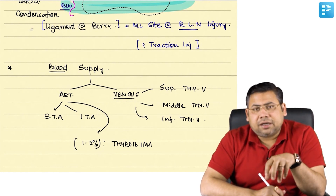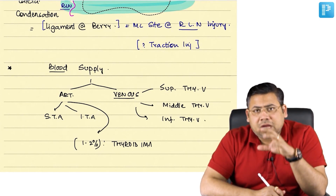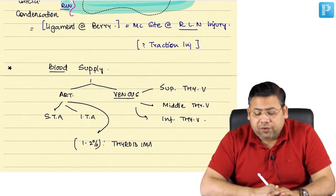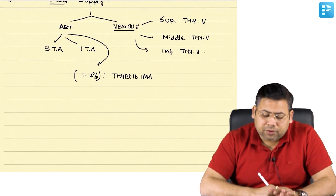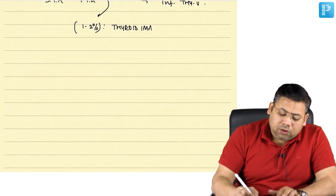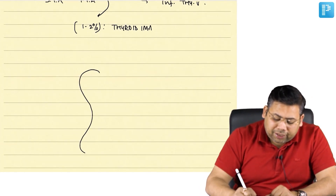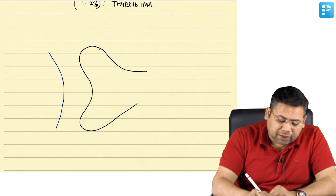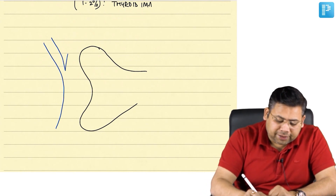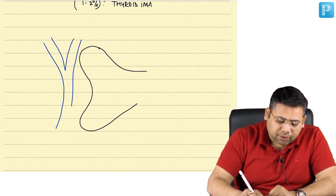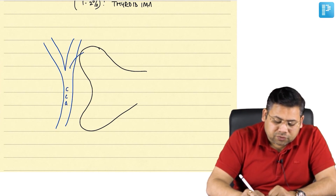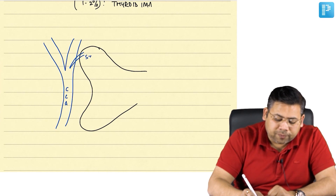Now I am discussing this arterial supply because I want to discuss some important anatomical relations — they are very, very important. So let us take this to be a thyroid. We have the common carotid giving rise to internal and external. The external will give one branch which is known as the superior thyroid artery.